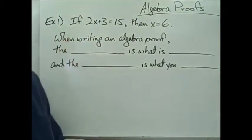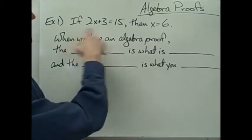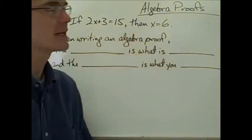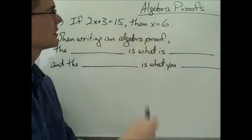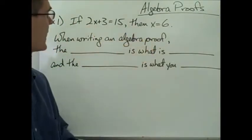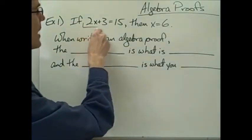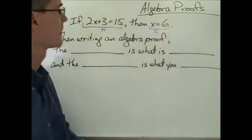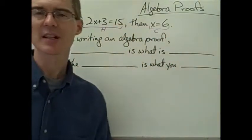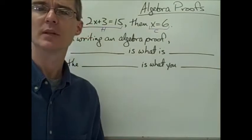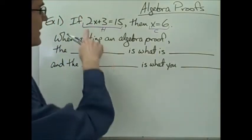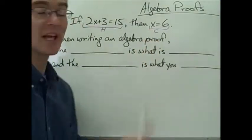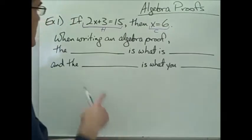Take a look at example number one. We have this conditional statement: if 2x plus 3 equals 15, then x equals 6. This is a conditional statement in if-then form, and I can label the hypothesis and the conclusion. This conditional statement is a little bit different than the ones we've been looking at before — this part looks like an algebraic equation, and this just looks like the solution to the equation. And that's essentially what it is.